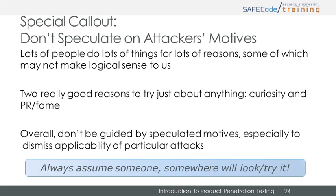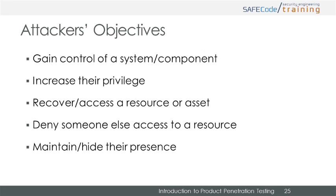The bottom line: just assume someone, somewhere, will try to attack your product. Since identifying attacker motives is too difficult and the possible motives are too numerous, your resources are better spent on understanding what you need to protect and building security measures to protect them. When attackers begin to find ways into your system, they are typically seeking to gain access and control, to increase their privileges, to recover or access resources, to deny access to others, and to maintain and hide their presence in your system.